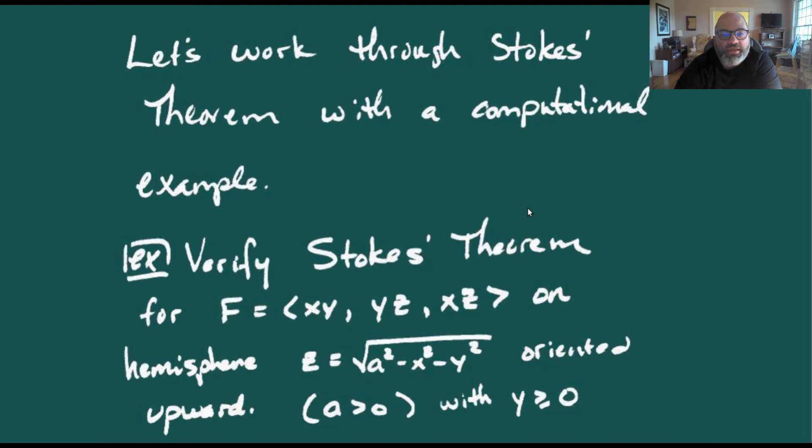We want to verify Stokes' Theorem for the vector field F = (xy, yz, xz) on a hemisphere of radius A centered at the origin. We want the top half of that hemisphere with an orientation upward, so our z components should be positive. In particular, we're only taking the sphere where y is greater than or equal to zero.